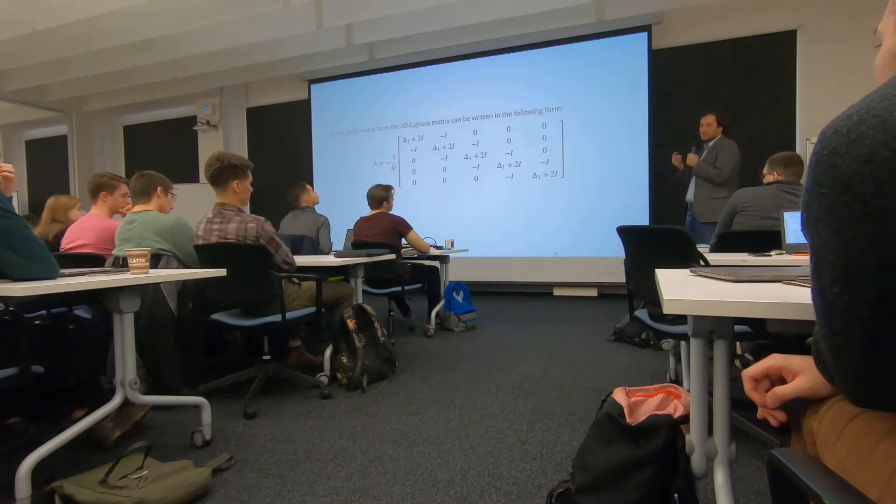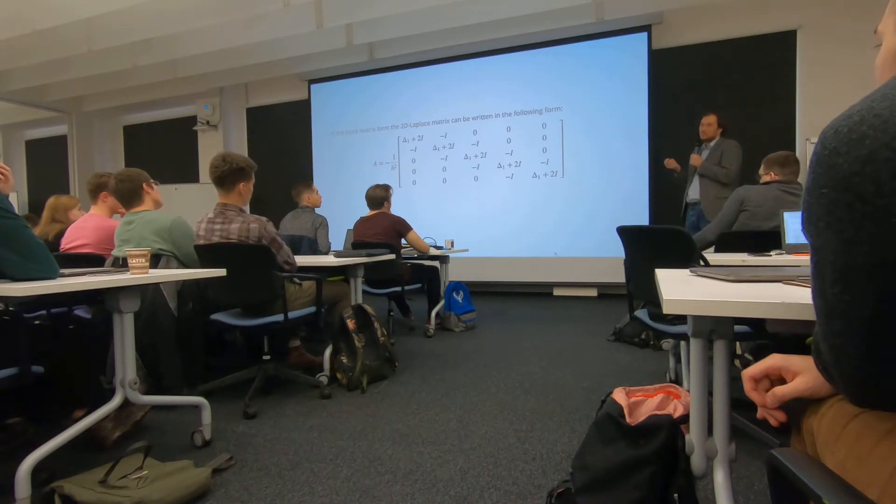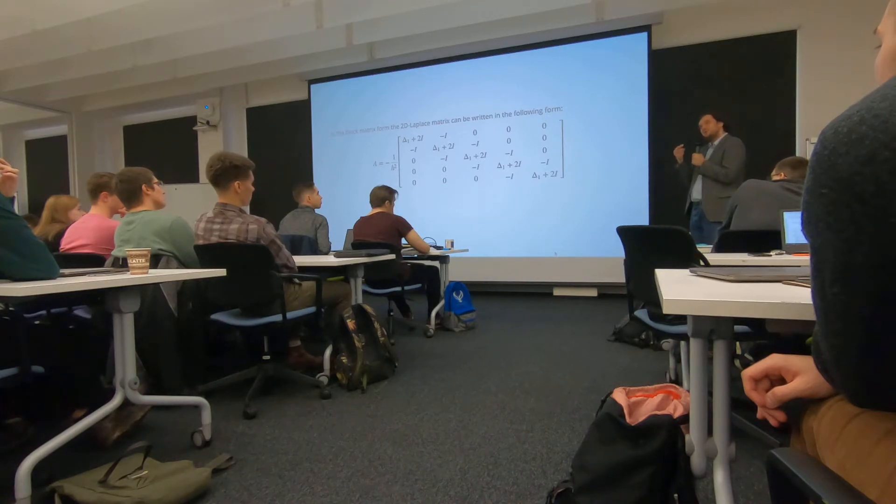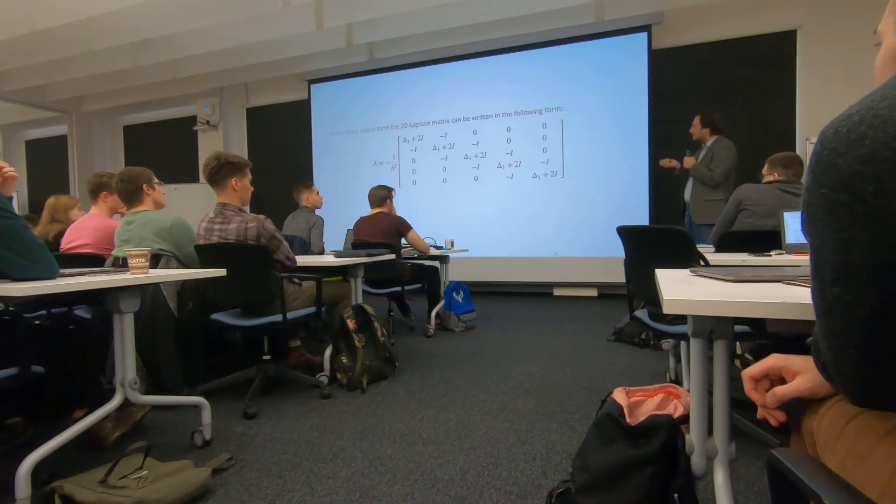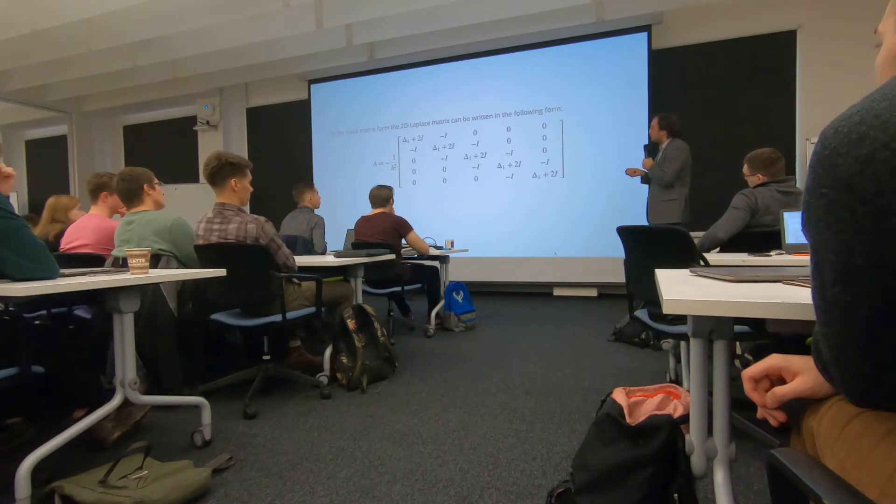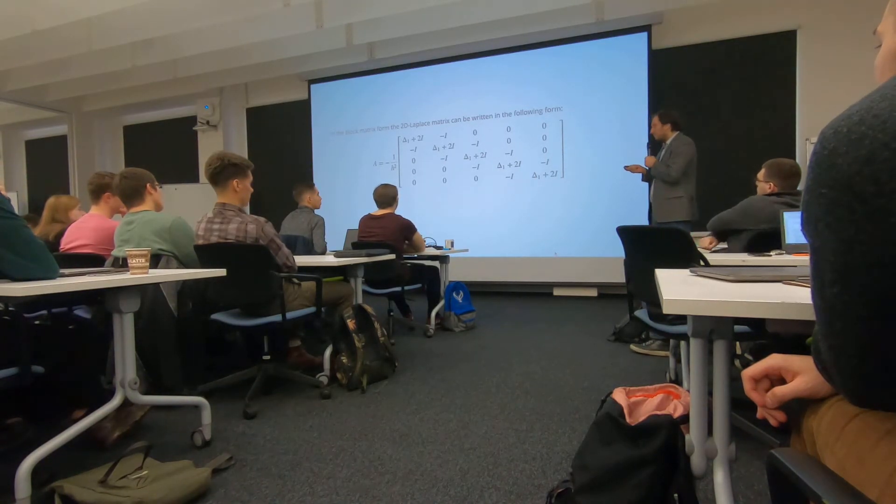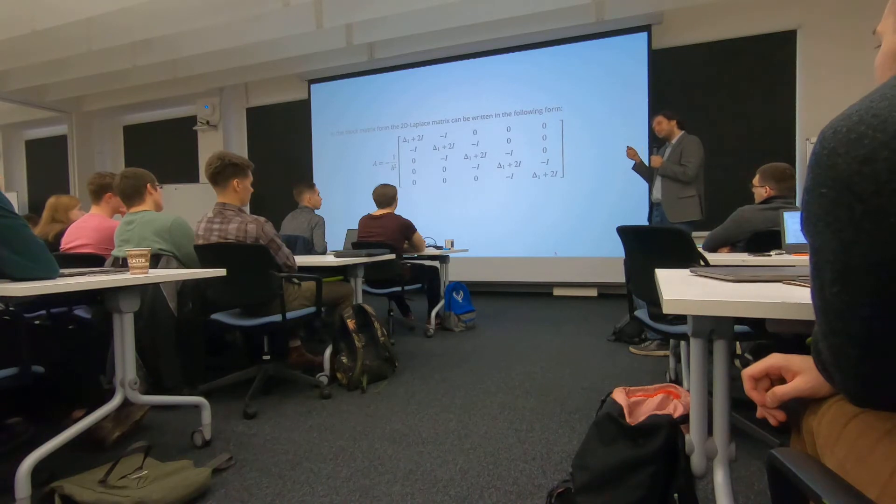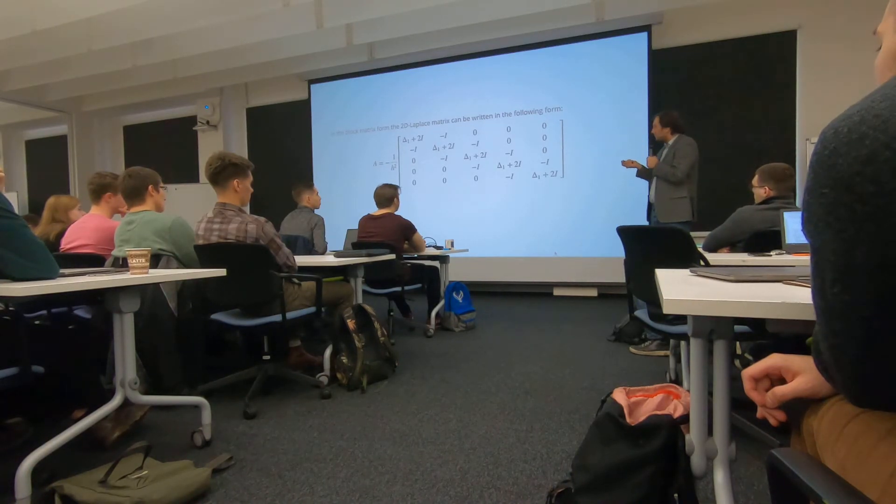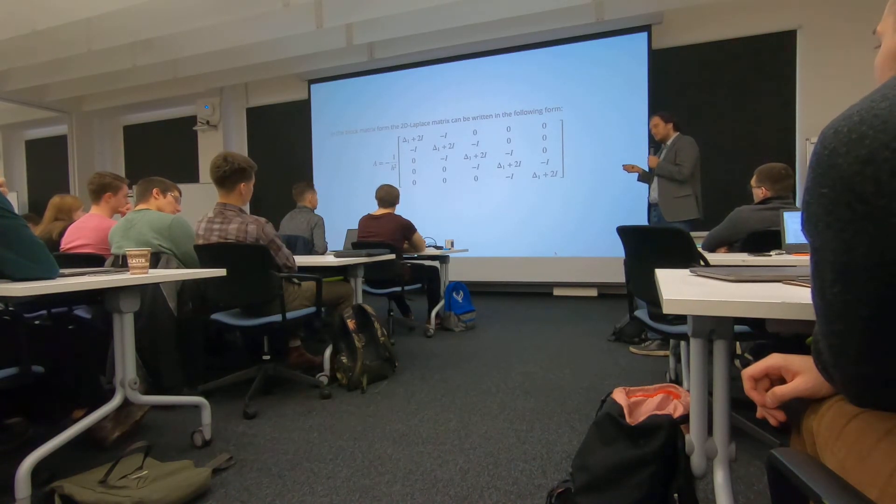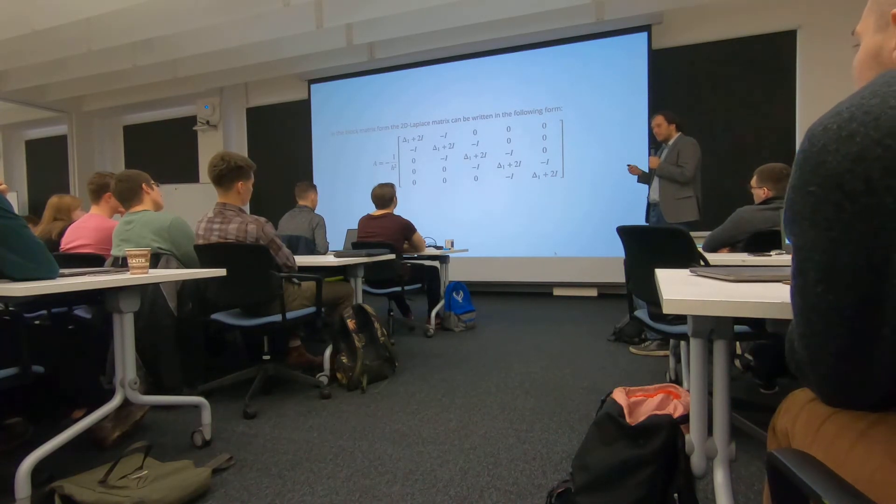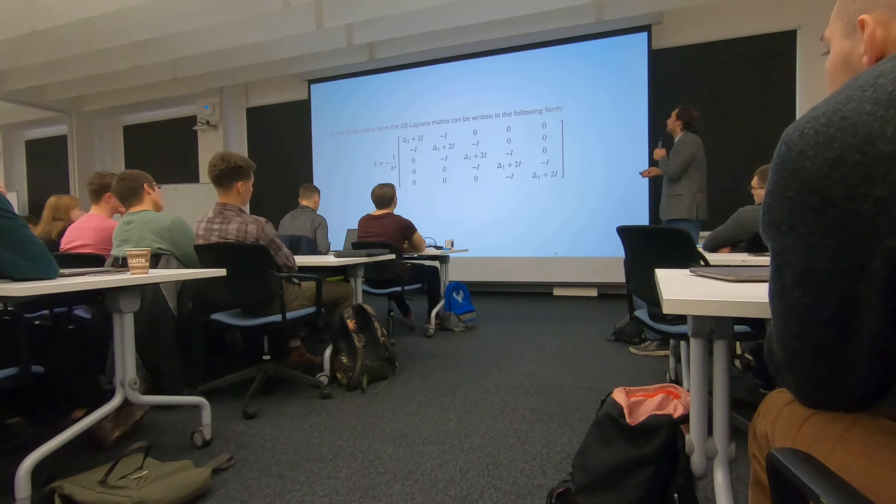It's still better than n cubed. It's still better than n squared, but it's still worse than n. You cannot get linear complexity for this kind of matrices. This is related to the graph properties. If you view this as an adjacency matrix of a simple graph, then it follows from the properties of this graph. We will discuss it later on.